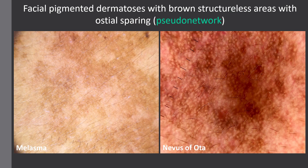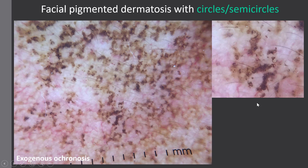The second group includes dermatoses characterized by brown structural areas with ostia-sparing, namely pseudonetwork — melasma and nivisovota. In melasma we have more homogeneous areas, while in nivisovota these areas are more inhomogeneous and we may also appreciate ostial obliteration. The third group includes exogenous ochronosis, characterized by the presence of brown-gray circles and semicircles.